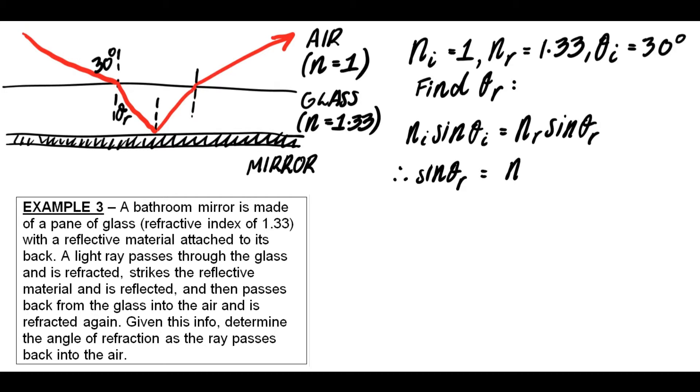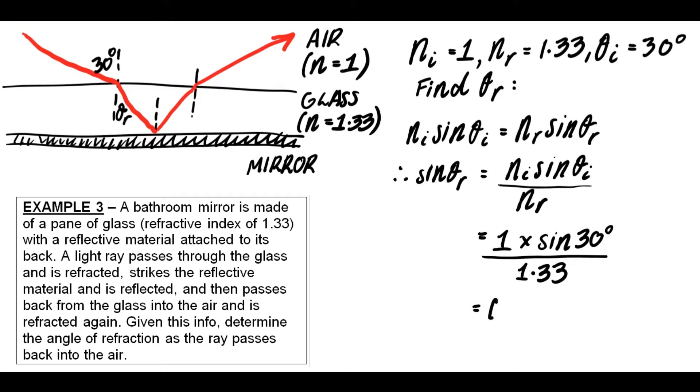So first step, rearrange that Snell's Law equation. Then once I've done that, substitute in the numbers, put them into a calculator and solve for the sin of θr. So the sin of θr is 0.376. Now I need to take that and do an inverse sine on that, so inverse sine of 0.376, and when I solve that I get an angle of refraction of 22.1 degrees. So I've labeled that on the diagram there.